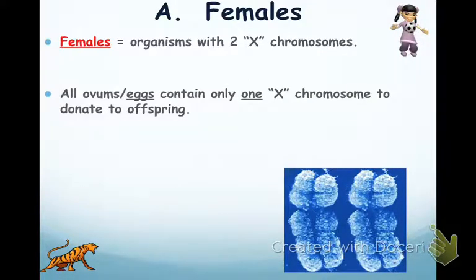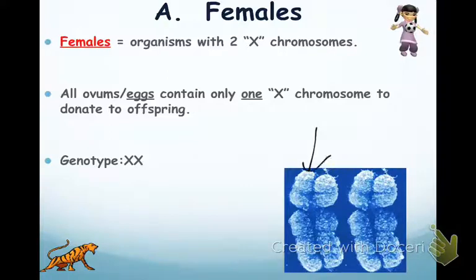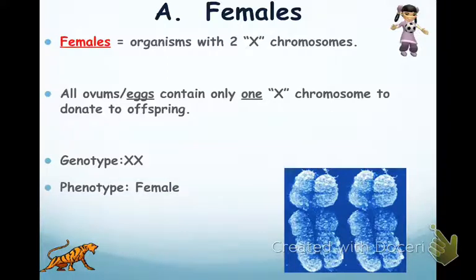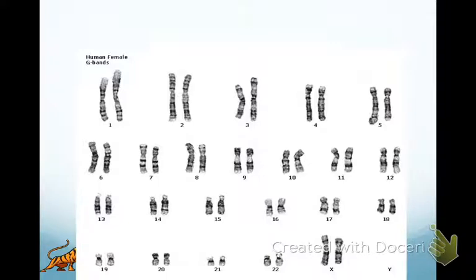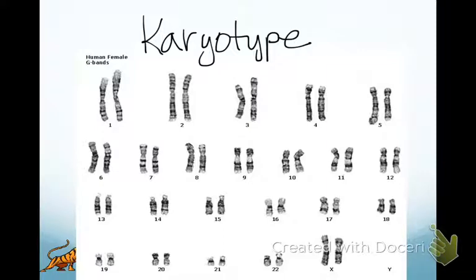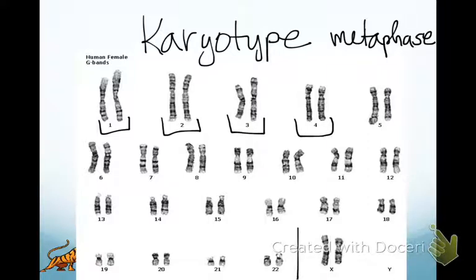A female has two X chromosomes. Where did she get those? She got one of her X's from her mom — mom only has X chromosomes to donate. The other X had to come from dad. So one she got from mom and the other one she got from dad. The genotype is XX, phenotype is female. Here we have what's called a karyotype — a photograph of your chromosomes during metaphase of mitosis. They're paired up and arranged by size. Pairs 1 through 22 are our autosomes, paired from longest to shortest, and the sex chromosomes are given last. Because this individual has two X chromosomes, it's a female.